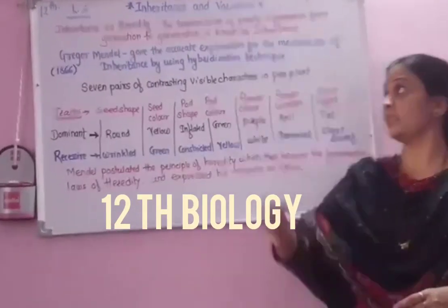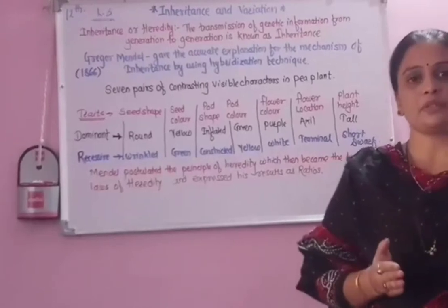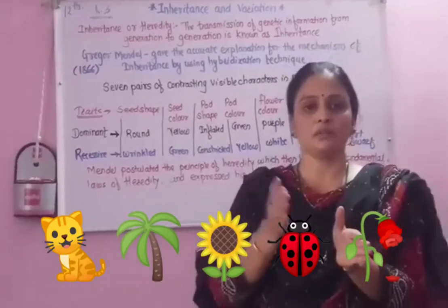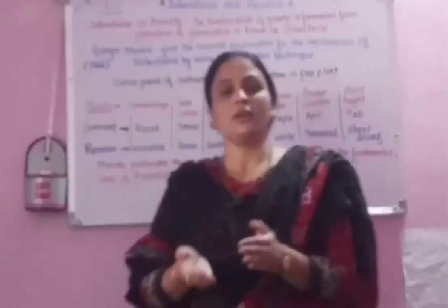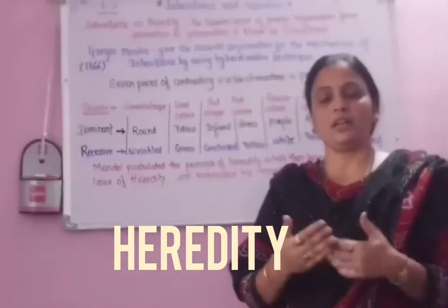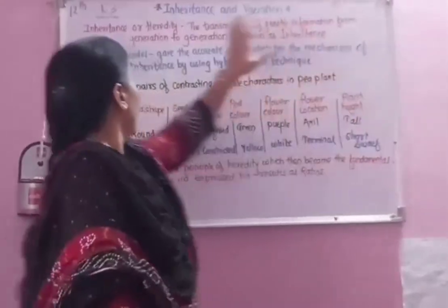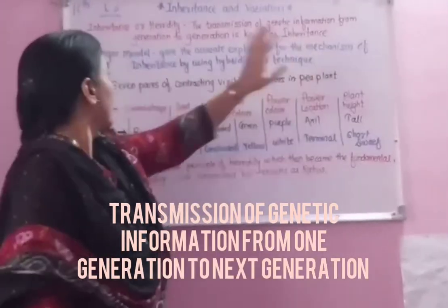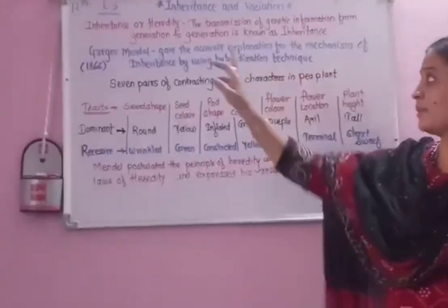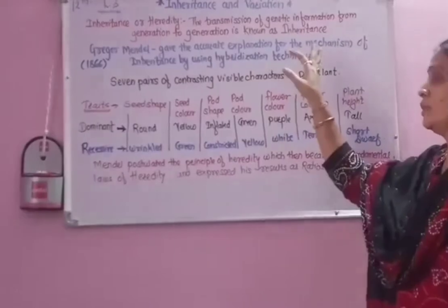I am going to teach lesson number 3: inheritance and variation. Every living organism reproduces, and this is a unique characteristic of living organisms. The meaning of inheritance is heredity. Another word for inheritance is heredity. The transmission of genetic information from generation to generation is known as inheritance.